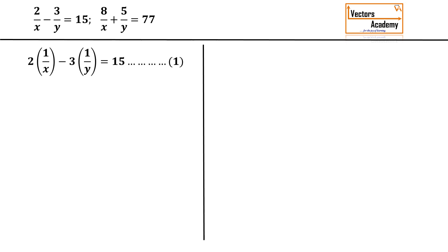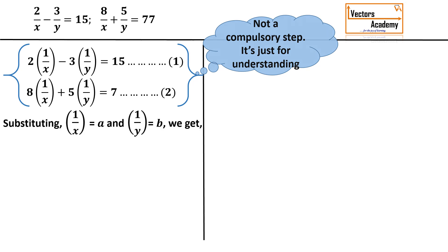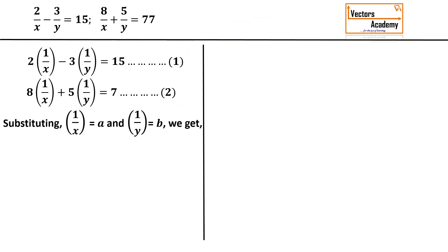Now I can arrange this equation by writing 2/x as 2 times 1/x and 3/y as 3 times 1/y, and exactly the same way for the second equation. Now I'll substitute 1/x equal to a and 1/y equal to b. After substitution, the first equation becomes 2a minus 3b equal to 15, and the second equation becomes 8a plus 5b equal to 77.